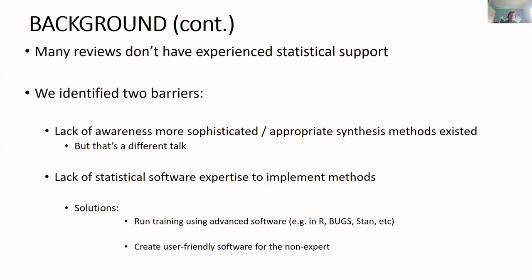When we started we were given quite an open canvas in terms of how we achieved these goals. We identified several barriers, and two important ones were: first, a lack of awareness about more sophisticated and arguably more appropriate synthesis methods that people could have been using to make the most of their data and answer the most relevant clinical questions. The second major observation — the one I'm going to talk about today — is a lack of statistical software expertise to implement the methods. Many people doing systematic reviews may not have experienced statistical support.